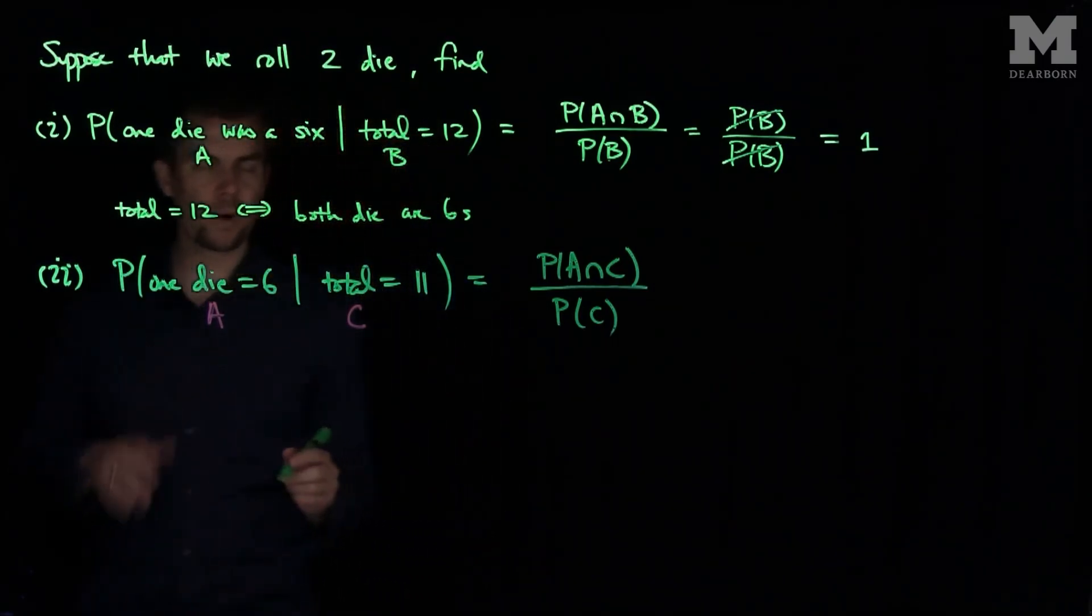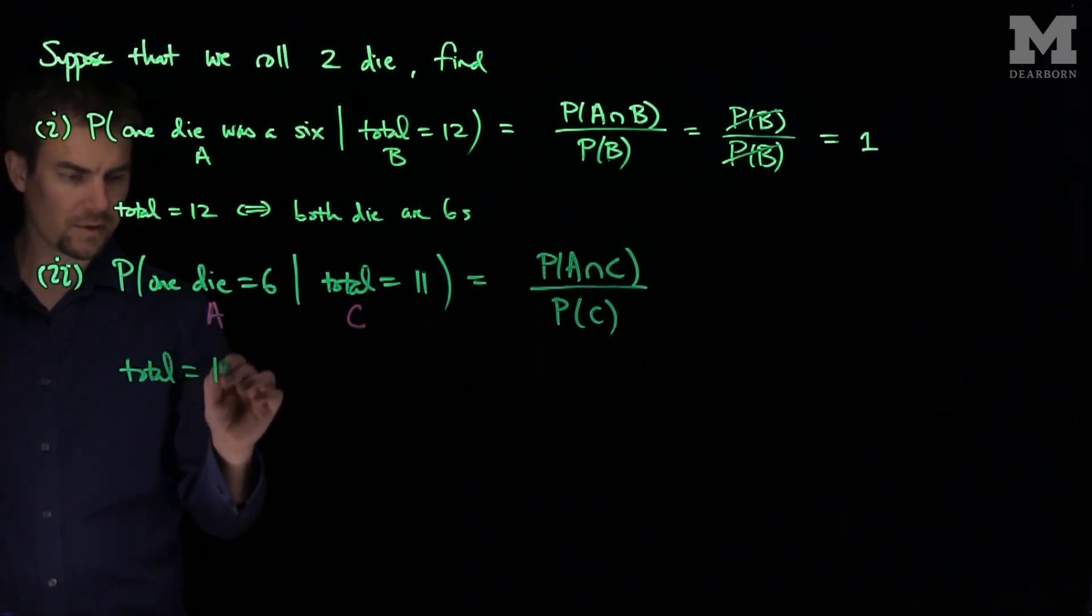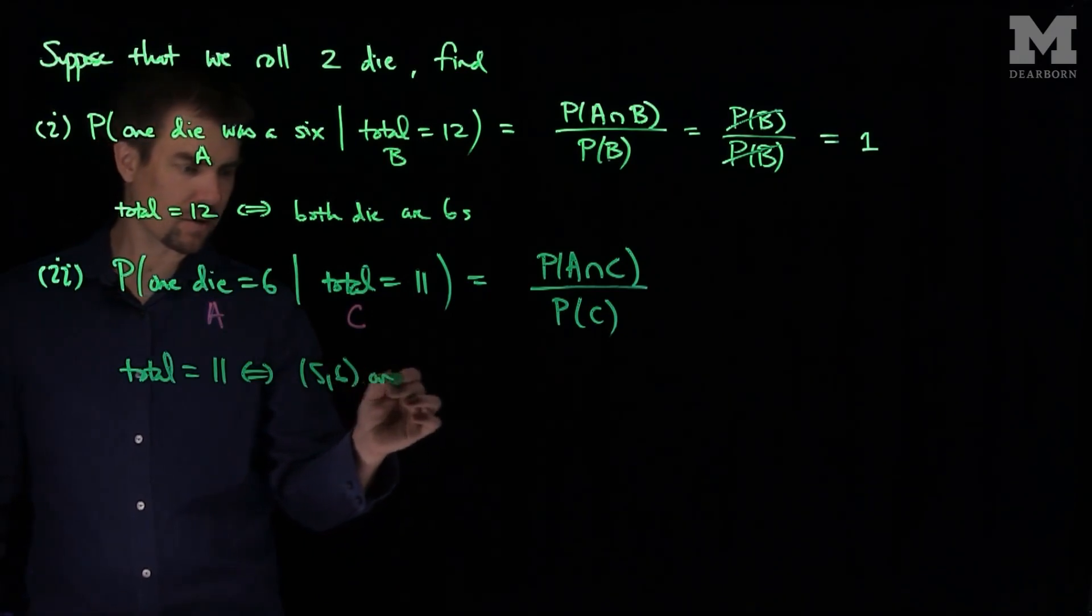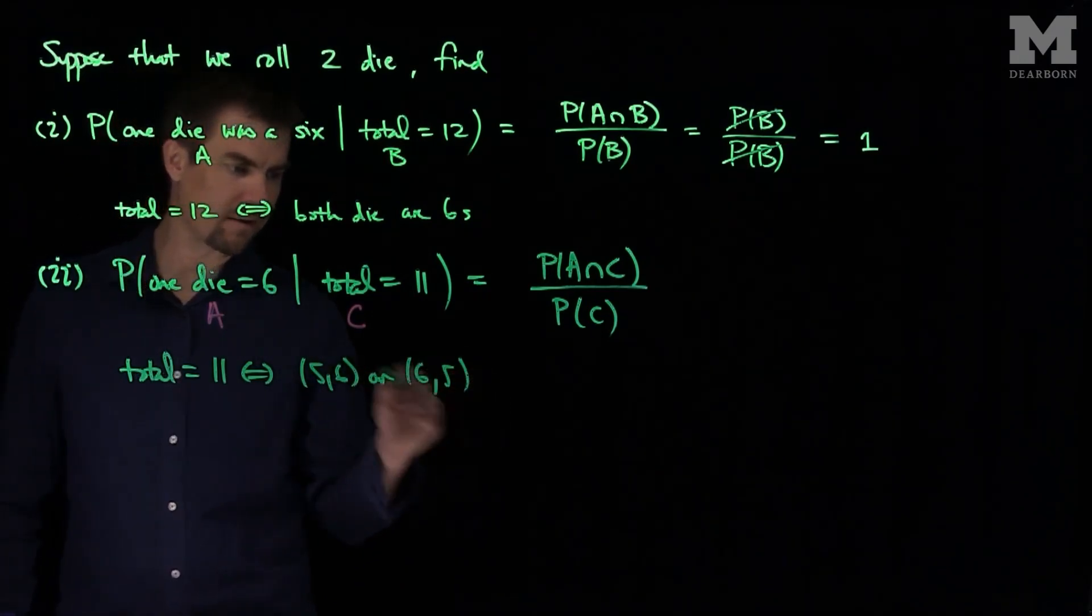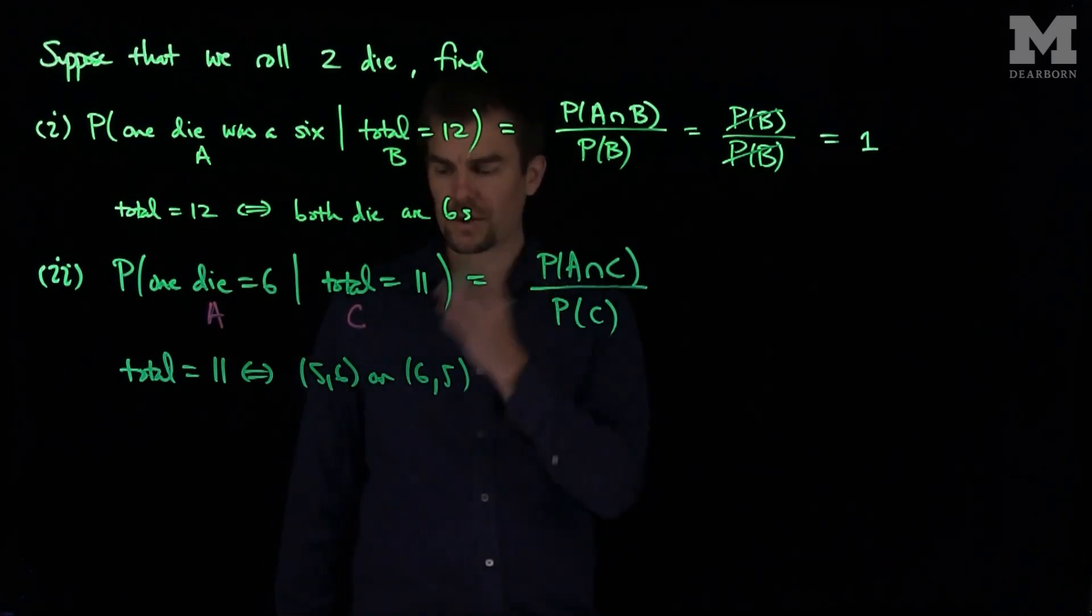And now there's only two ways for the total to be 11. Total equals 11 if and only if you have the pairings 5, 6 or 6, 5 with your roll. So there's two possible ways out of 36 total to get an 11.